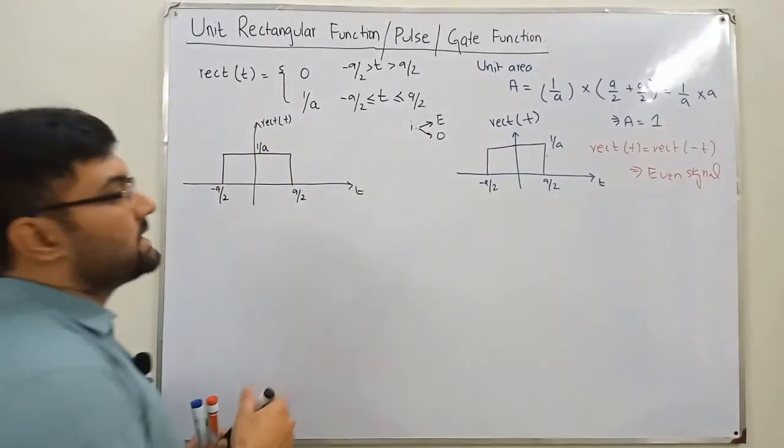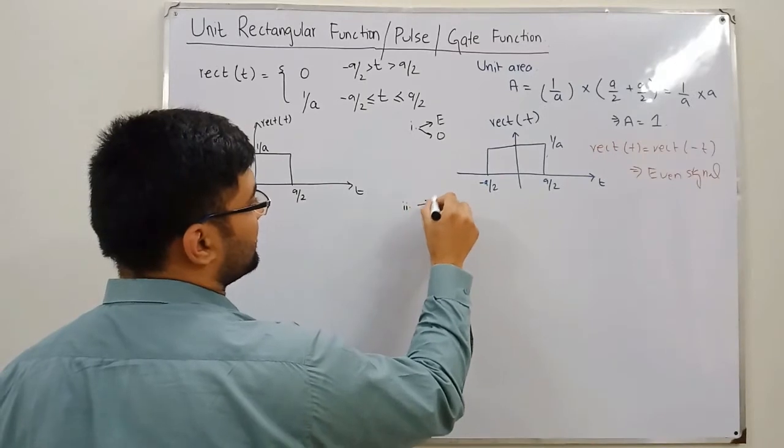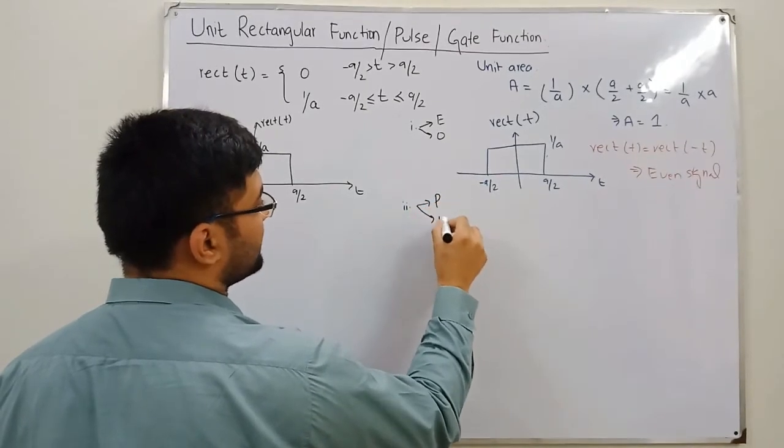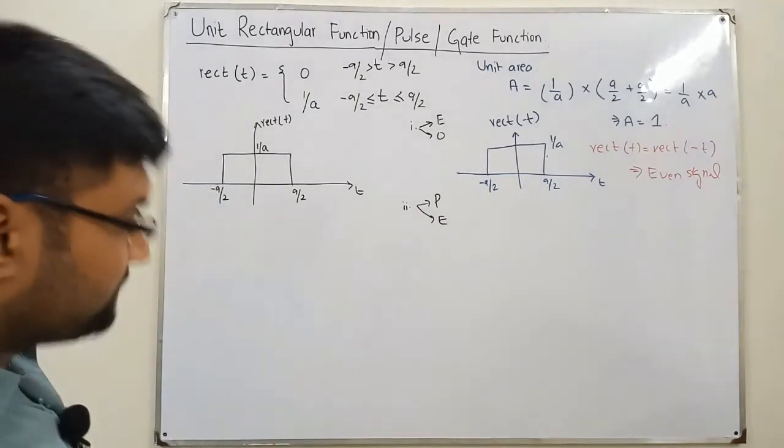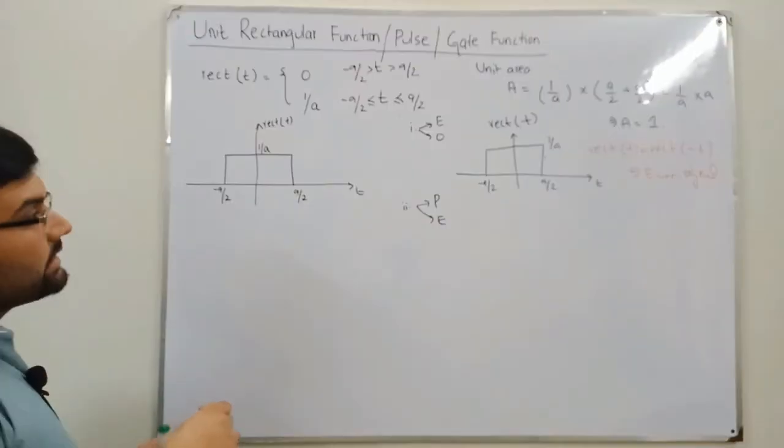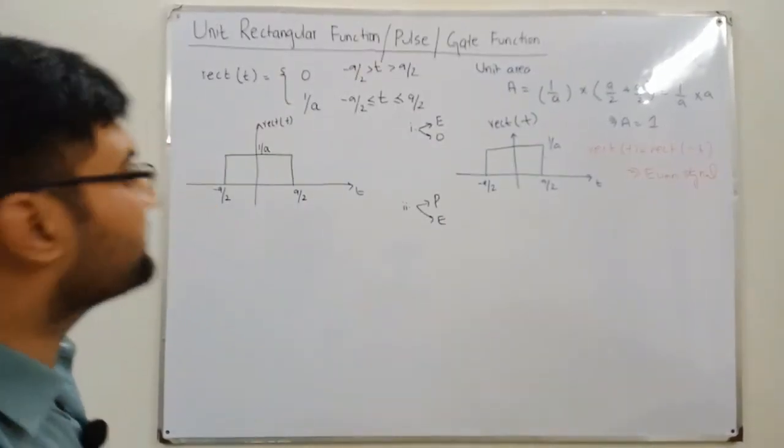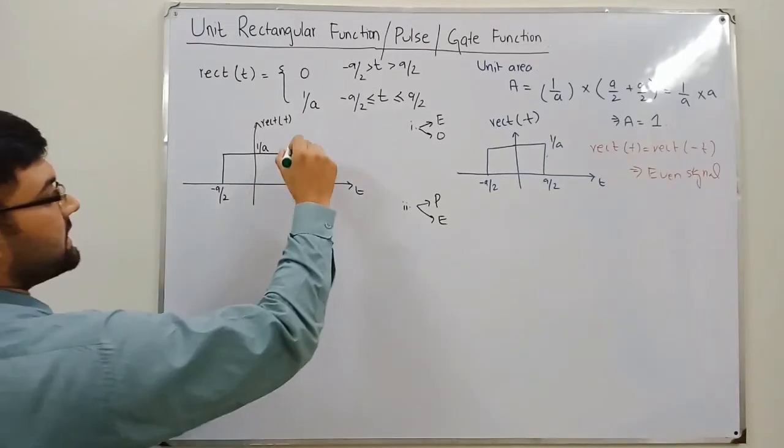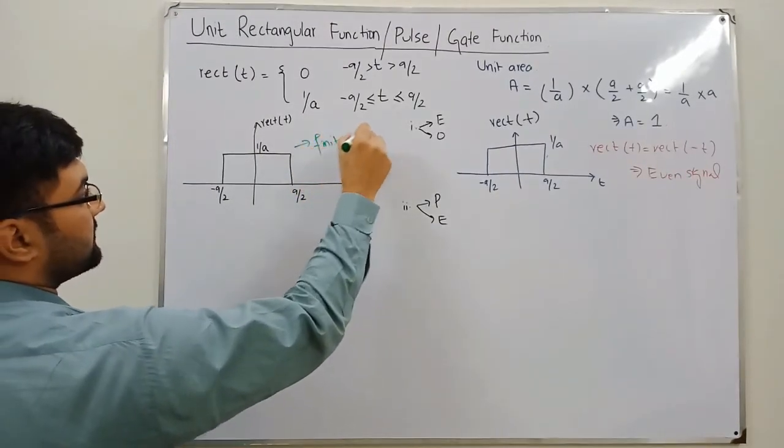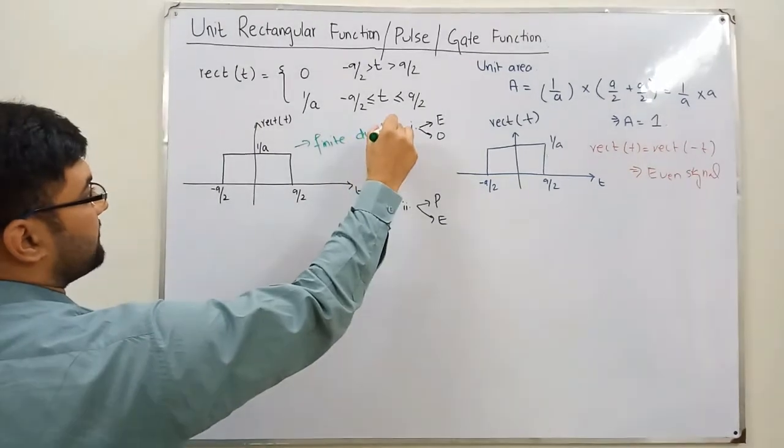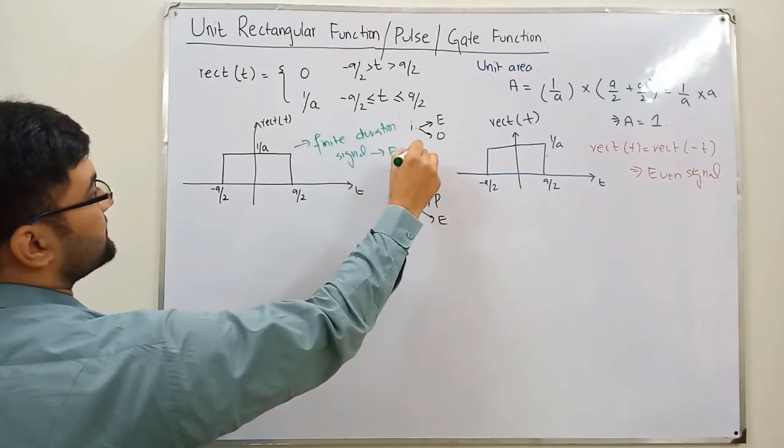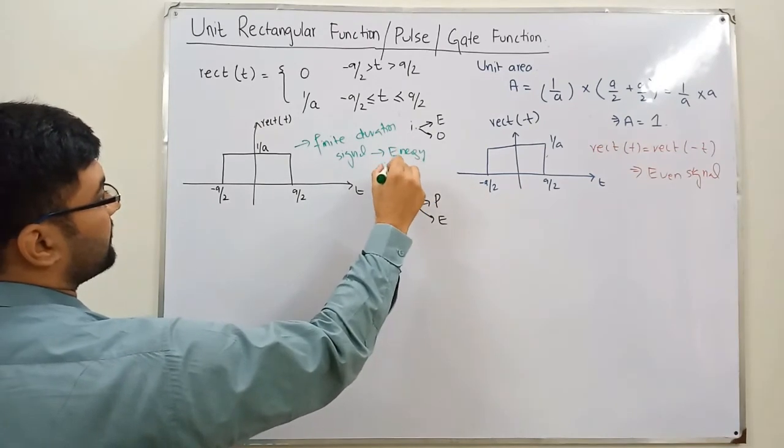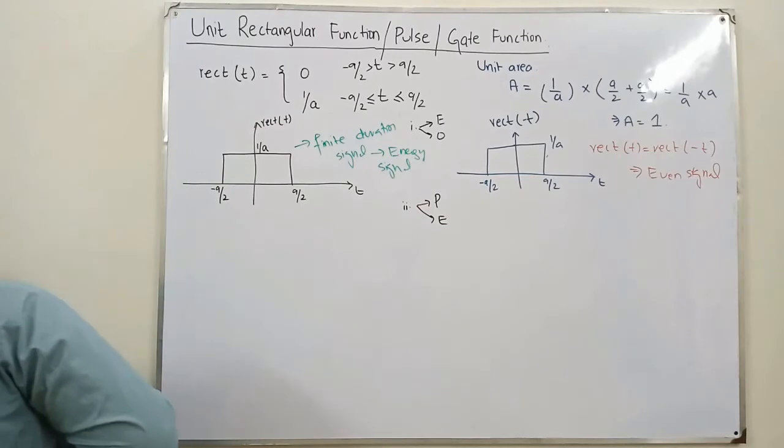Now in the next step, we check if this signal is power signal or is it energy signal. So I told you in the properties video that if the signal is a finite duration signal, as this one is a finite duration signal, so this means that this is an energy signal.